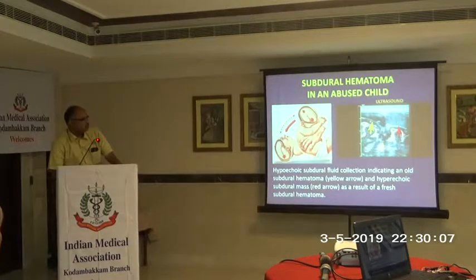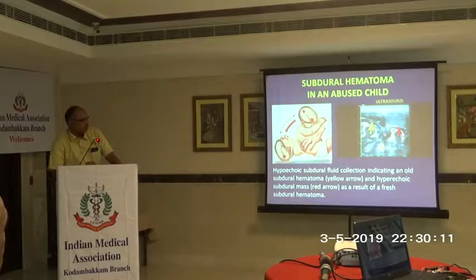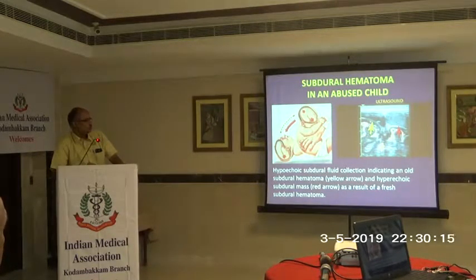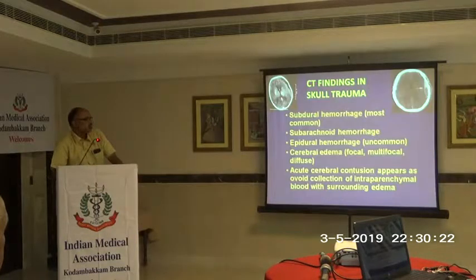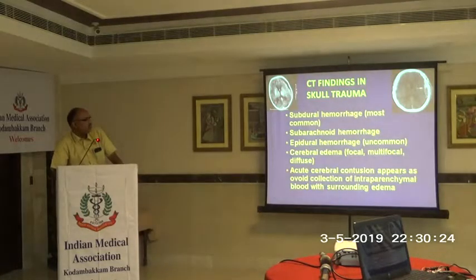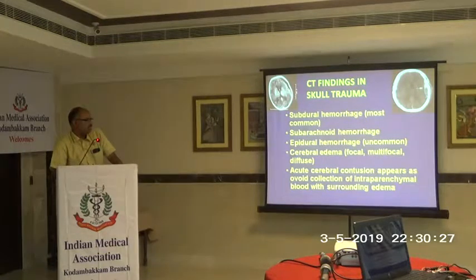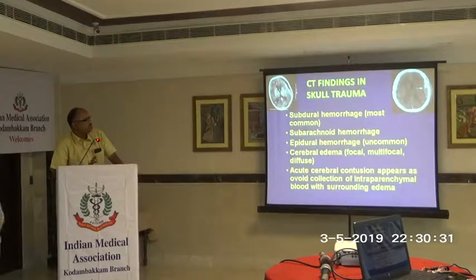Subdural hematoma can also be identified. You can do an ultrasound — neonatal ultrasound, a neurosonogram — which will also pick up subdural hematoma. Once that is found, you can do a CT scan or MRI scan. CT findings include subdural hemorrhage, subarachnoid hemorrhage, epidural hemorrhage, cerebral edema, and acute cerebral contusions — all possible in the battered baby child.